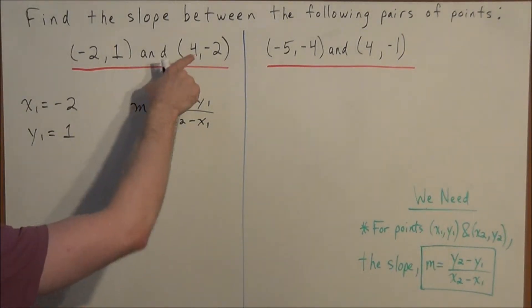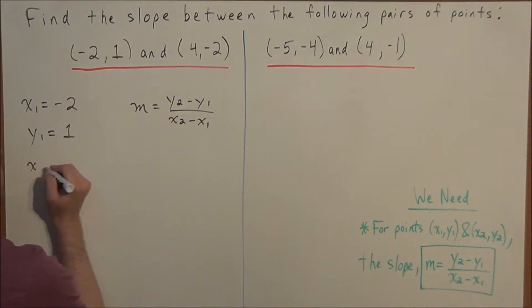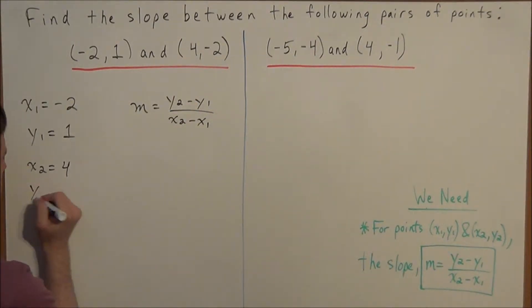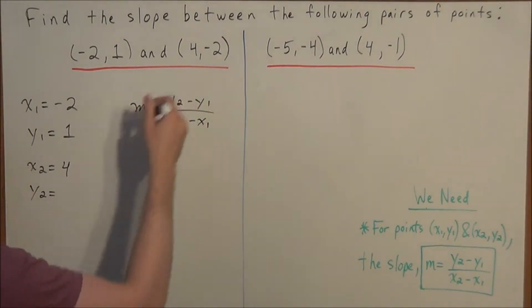So now we look and we designate an x2, y2. So we could set x2 equal to four since the x coordinate of the second point is equal to four. And now we have a y2 of negative two.